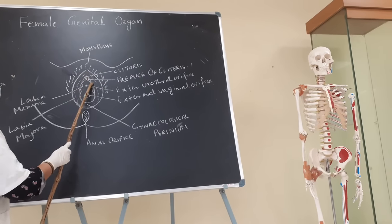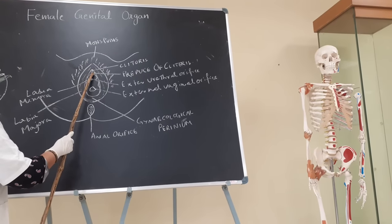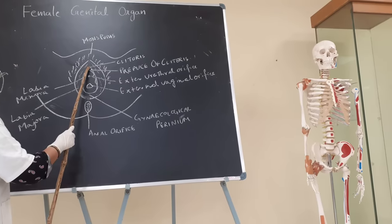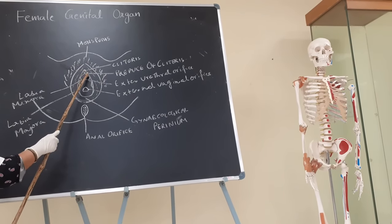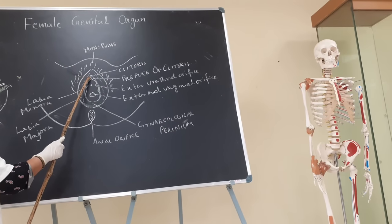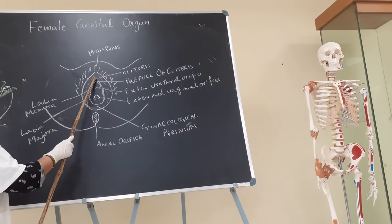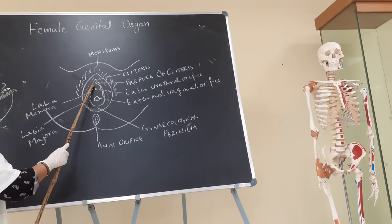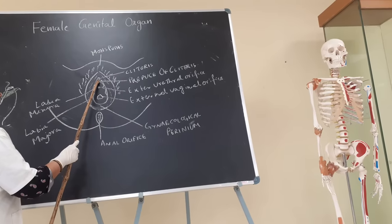Anteriorly, the two labia minora split over one prolongation called the clitoris. The superior layer unites with the corresponding superior layer to form the prepuce of the clitoris. The inferior layer forms the frenulum of the clitoris.